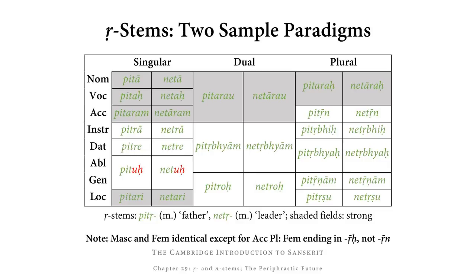Now let's look at the weak forms. In the singular, we have the weak stem pitṛ in zero grade, plus the endings -ā and -e that we already know from other consonant stems. In the ablative and genitive, we have the one new ending: -uḥ, so we get pituḥ. Parallel forms for netṛ: netrā, netre, and netuḥ — the -uḥ ending is the one we just need to memorize. In the dual, pitṛ-bhyām and pitroḥ — the ṛ remains vocalic before -bhyām but changes to consonantal r before -oḥ.